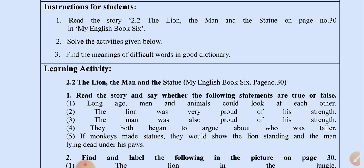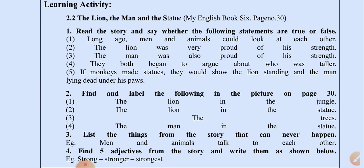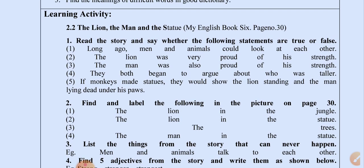On page number 31 the story is given — read the story from My English Book 6. Solve the activities given below. Find the meanings of difficult words in a good dictionary. Learn the story and say whether the following statements are true or false. Statement one: Long ago, men and animals could talk to each other.